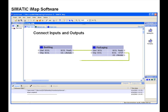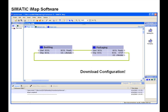the desired connections are made within the iMap software. After saving the file, it's then downloaded directly to each PLC via the Ethernet connection and the communication is running.